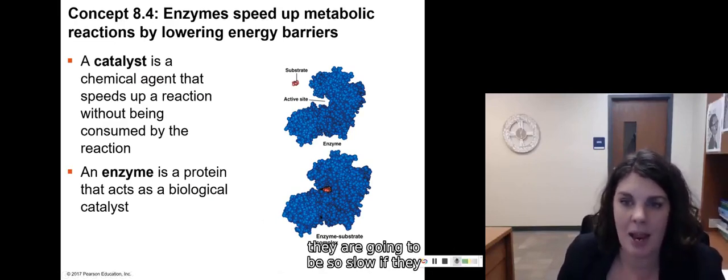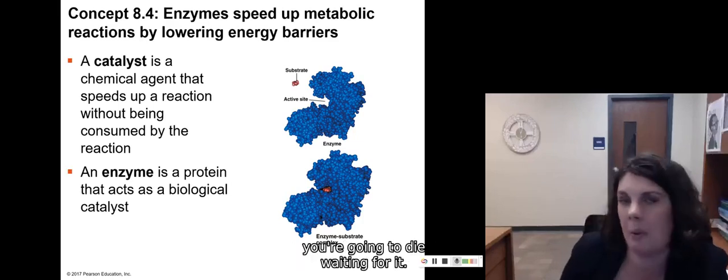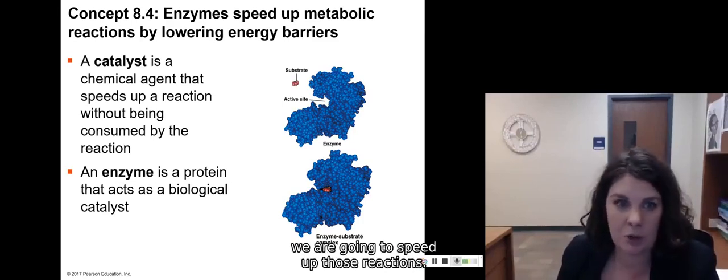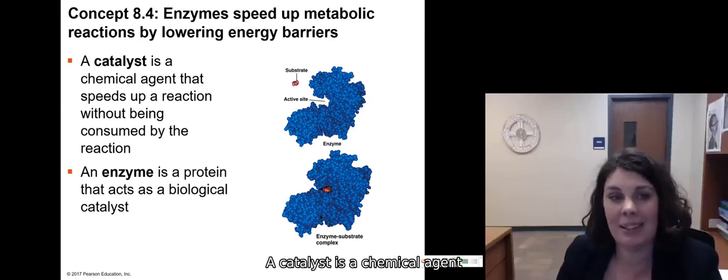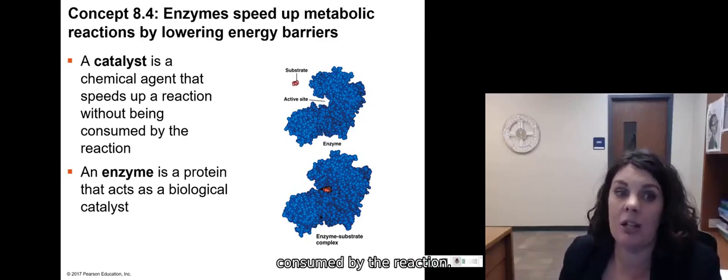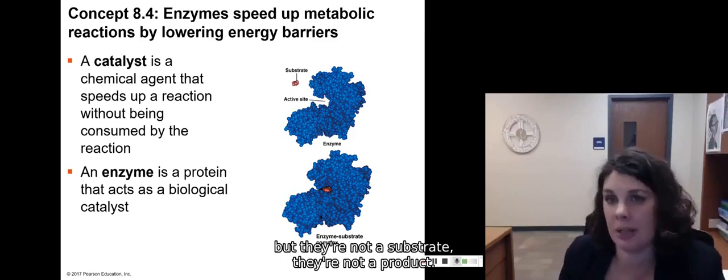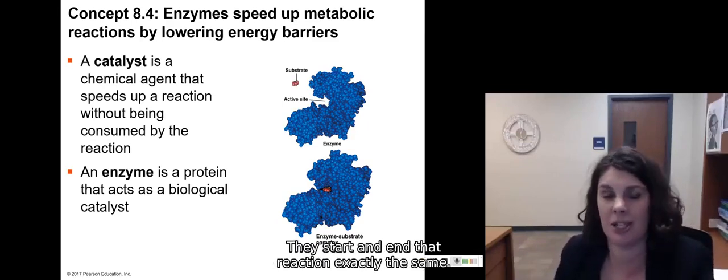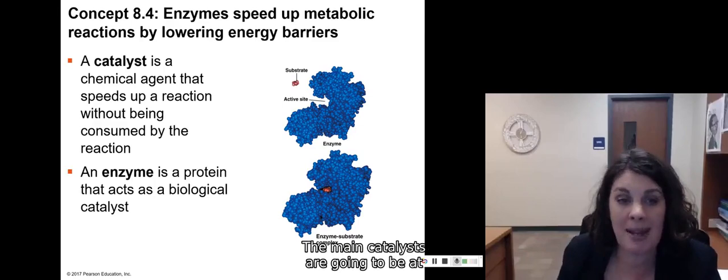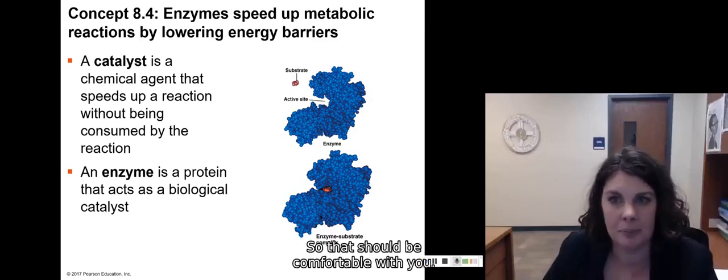A lot of these reactions, even though they're exergonic, they are going to be so slow if they happen by themselves that essentially you're going to die waiting for it. Like literally, you die waiting for it. So instead of dying, we are going to speed up those reactions. A catalyst is a chemical agent that will speed up a reaction. Also important, catalysts are not consumed by the reaction. So they make the reaction happen, but they're not a substrate. They're not a product. They start and end that reaction exactly the same. They're not changed or used up at all. In our cells, the main catalysts are going to be proteins that are called enzymes. That's a word we've talked about already. So that should be comfortable with you.